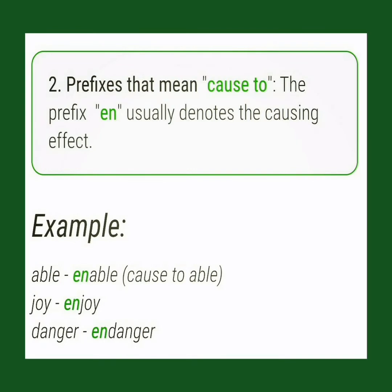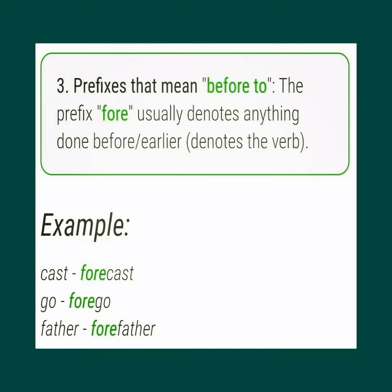Prefixes that mean 'cause to': the prefix en- usually denotes the causing effect. Examples: able → enable, that is 'cause to be able'; joy → enjoy; danger → endanger.